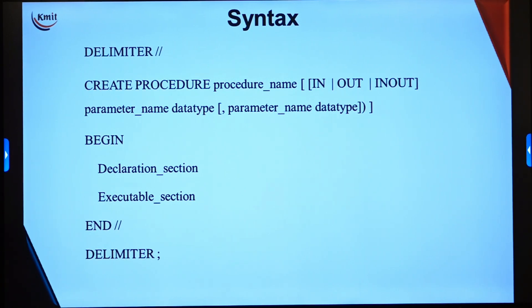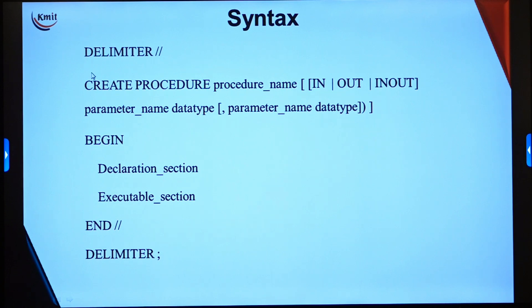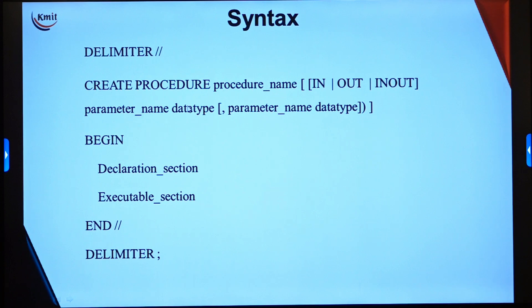Now let us see how to create a stored procedure. As with other CREATE statements, it starts with the keyword CREATE and the database object name. Here we have CREATE PROCEDURE followed by the procedure name. Because procedures can store multiple SQL statements terminated with semicolons, we change the delimiter to some other character — here we change it to double slash — before we start creating the procedure.